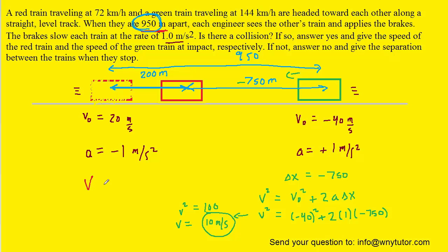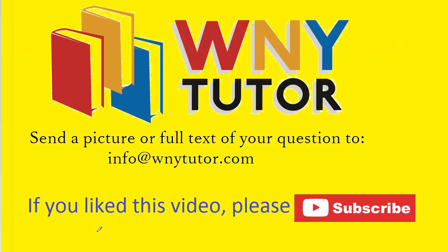In short, the green train is moving at 10 meters per second. The red train, we recall, was stopped, and its final velocity was 0 meters per second. Thanks for taking the time to watch the video. If you liked it, please subscribe to the channel so you can stay tuned for additional videos. You are also welcome to send in your own question to the email address shown on the screen.